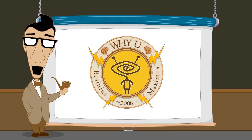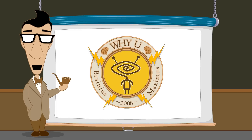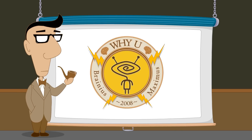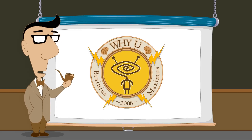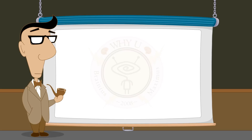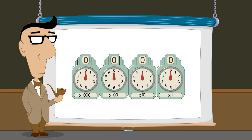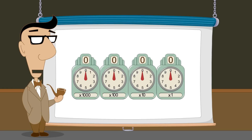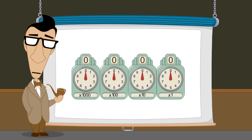Hello. I'm Professor Von Schmohawk and welcome to Why U. In our lecture on the decimal number system, we explain that this is an example of positional notation. In positional notation, the column occupied by a digit determines the multiplier for that digit.